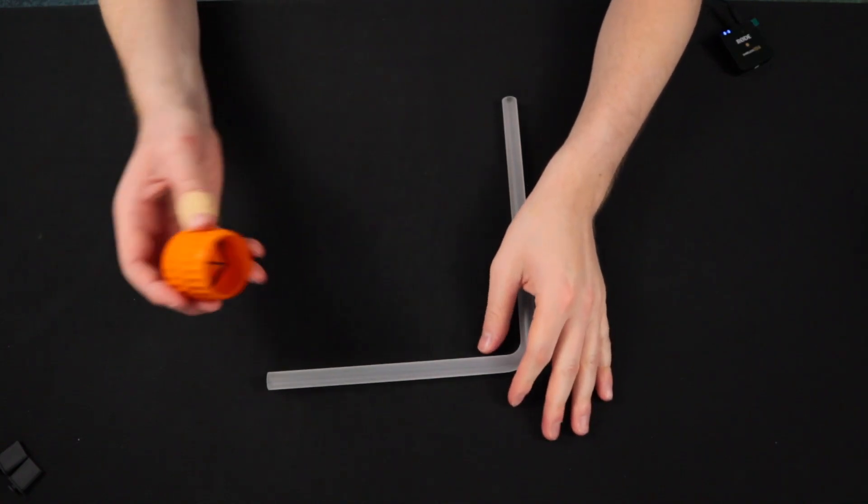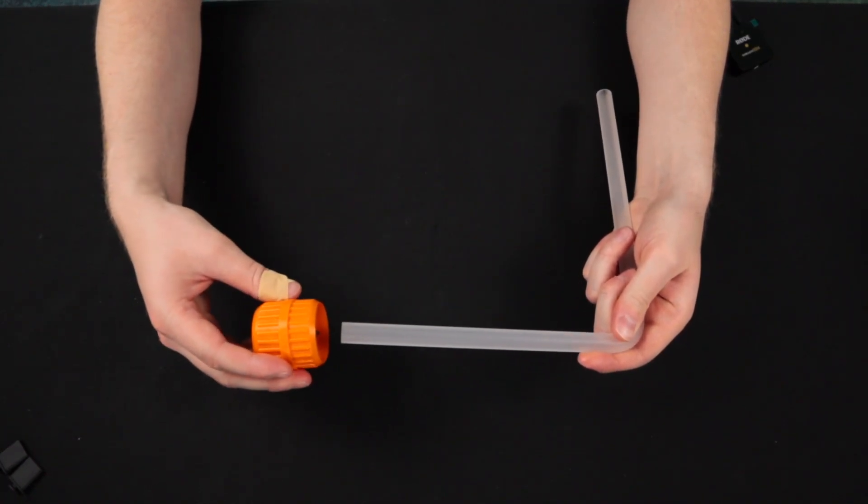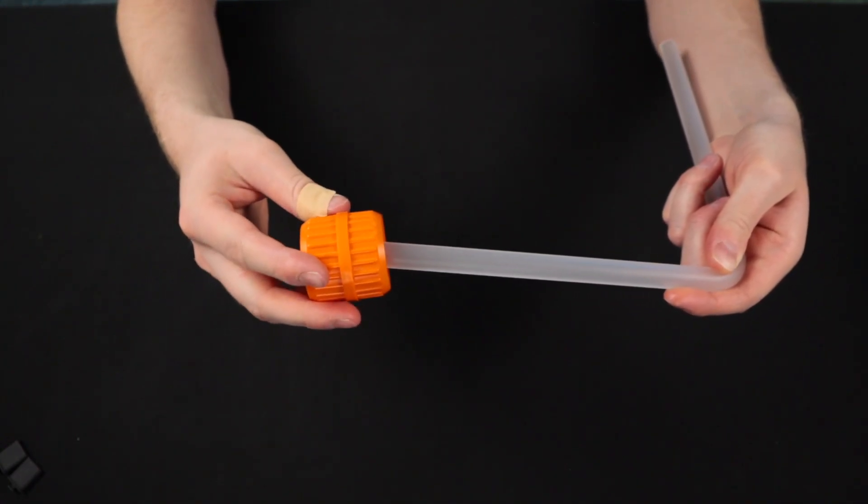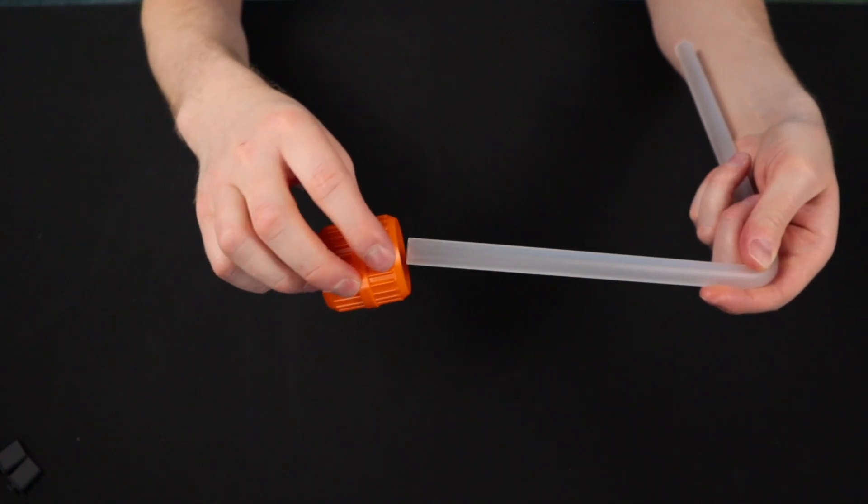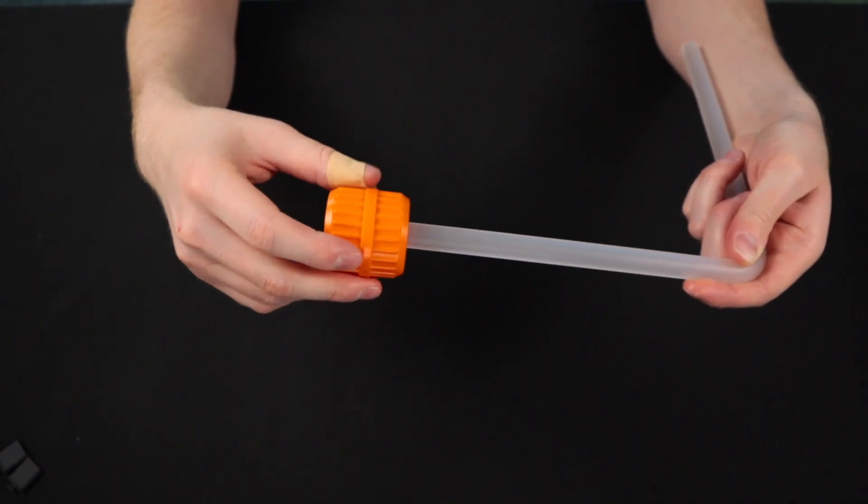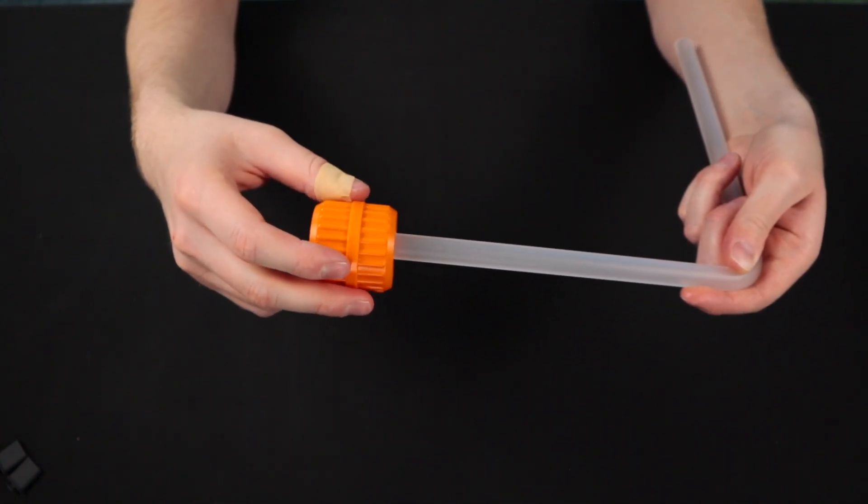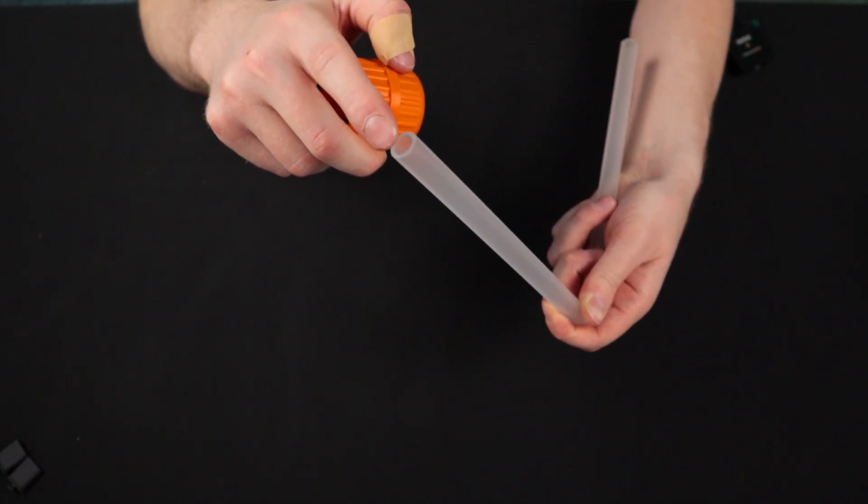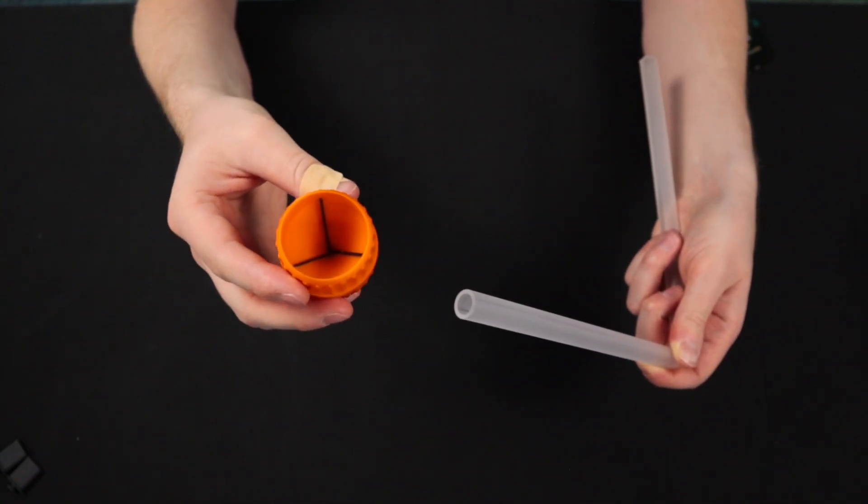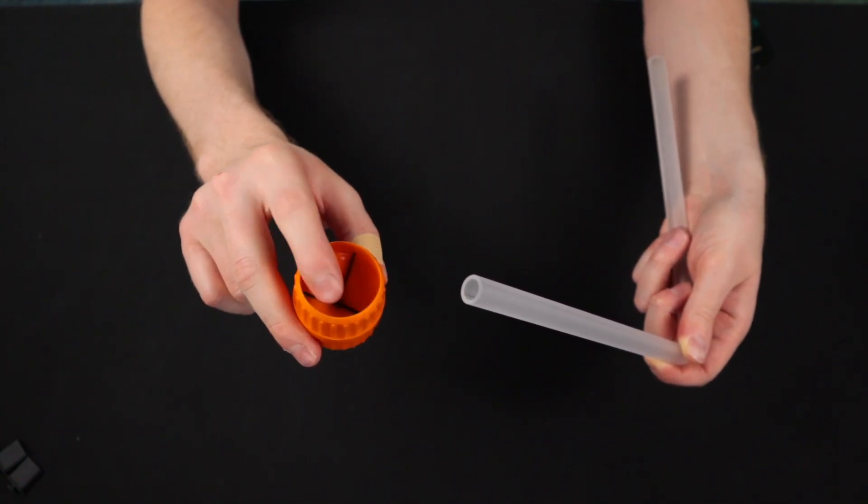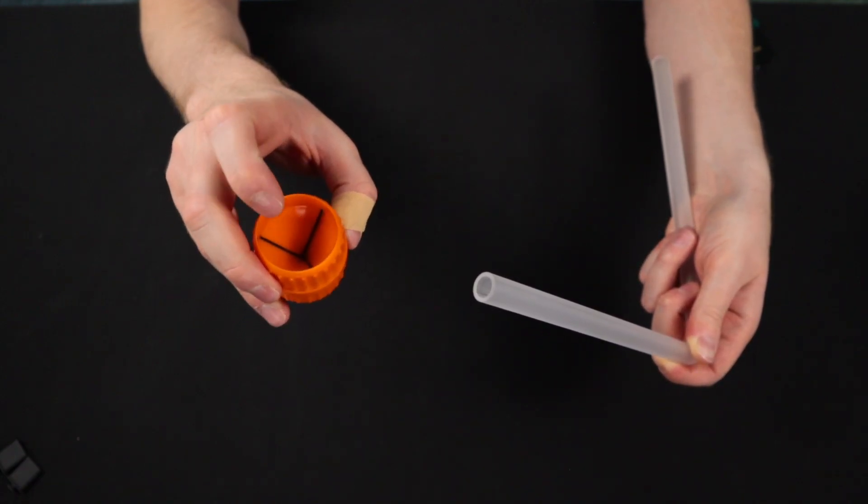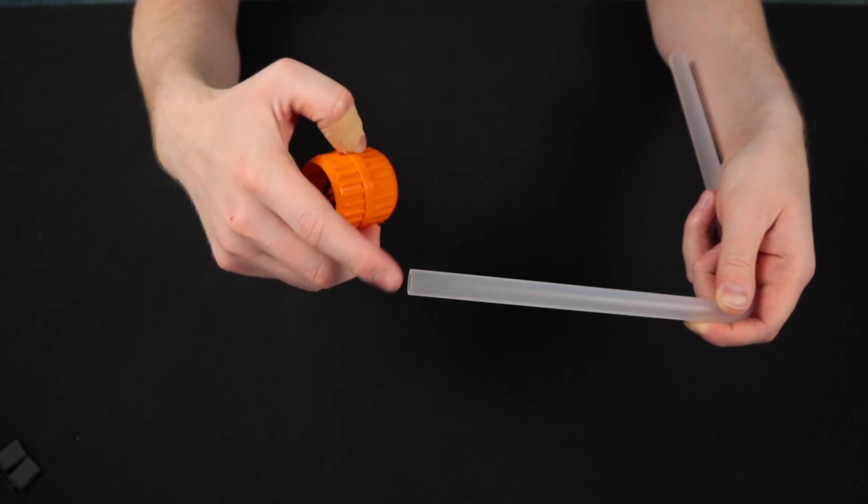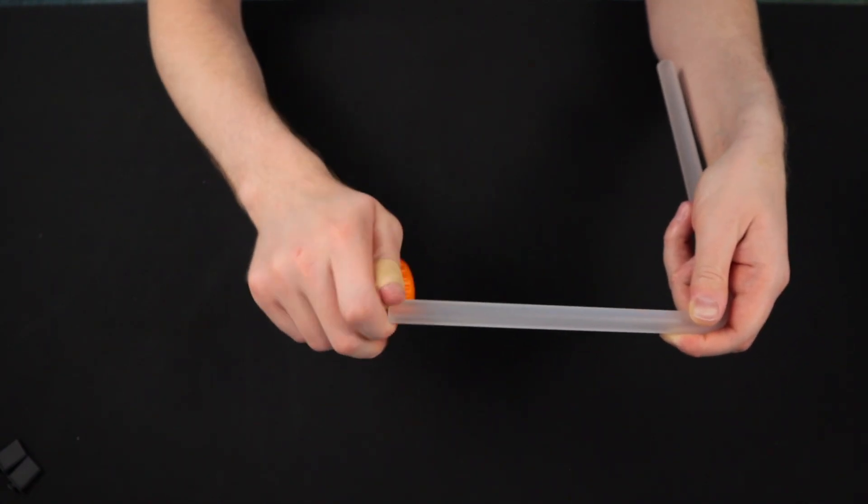So once you're done cutting your tubing to length you're going to want to deburr the inside by using the deburr tool by sticking it inside the tube with the pointy side into the tube and just spinning the deburr tool until you deburr the inside fully. You can take a look at it and make sure that it looks nice and feels smooth and then do the exact same to the outside of the tube with the part of the deburr tool that goes in. So you just stick the tube in, spin it until the tube looks nice and deburred and feels nice and smooth.